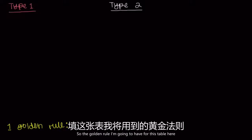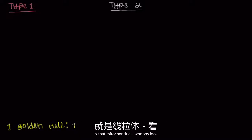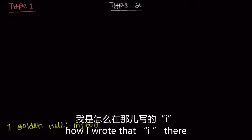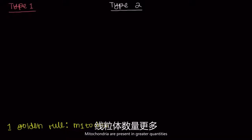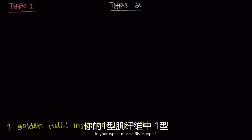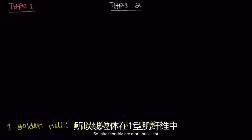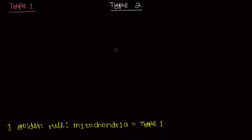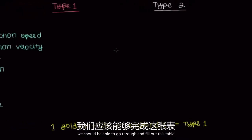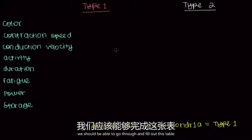The golden rule is that mitochondria are present in greater quantities in your type 1 muscle fibers. Mitochondria are more prevalent in type 1 muscle fibers than in type 2. And just based on that knowledge alone, we should be able to go through and fill out this table.